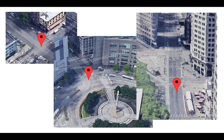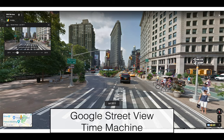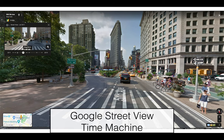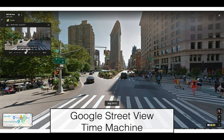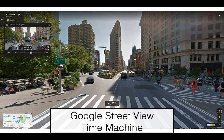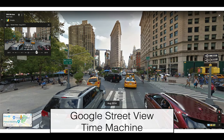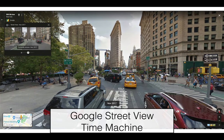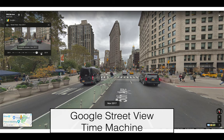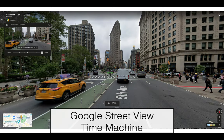We could put up webcams everywhere, but that would be extremely expensive. Instead, we turn to Google Street View time machine as a source of imagery. Since these images are captured by cars that repeatedly drive through a city, they contain the same locations captured over multiple years. Still, this imagery is a very sparse sampling in time.